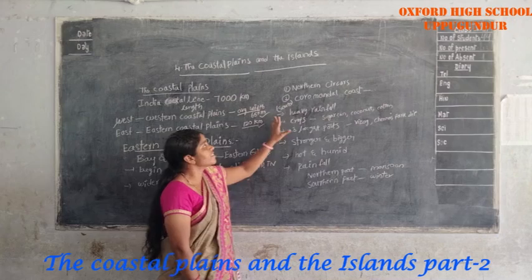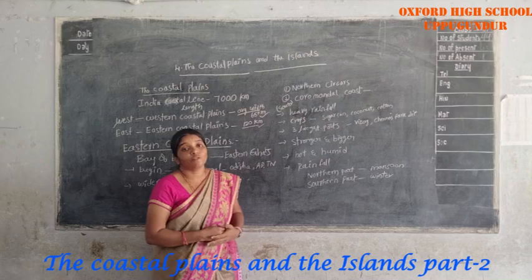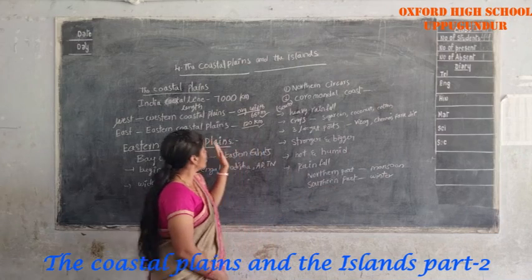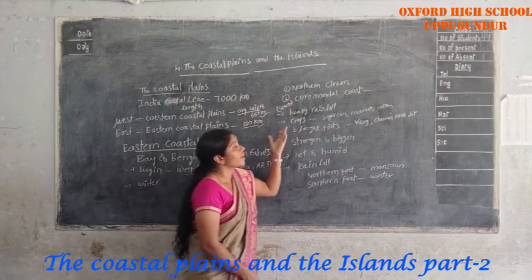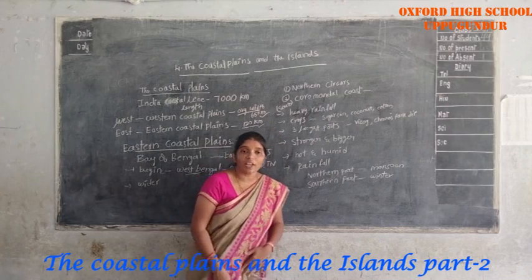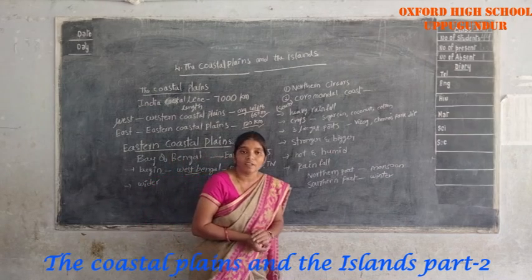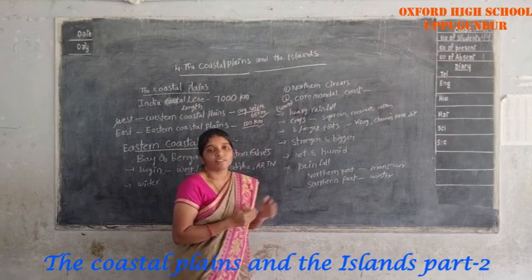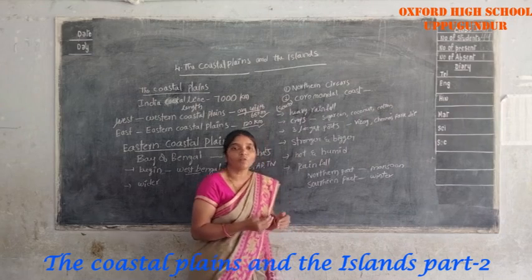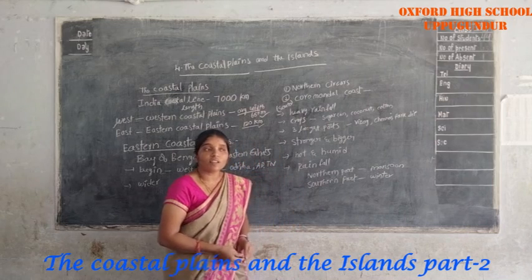The Eastern Coastal Plains receive heavy rainfall. Like the Malabar Coast in the Western Coastal Plains which receives very heavy rainfall. Those places have fine soil, which is very useful for growing crops. The crops grown here include sugarcane, coconut, cotton, and jute. Plenty of crops grow in the Eastern Coastal Plains.